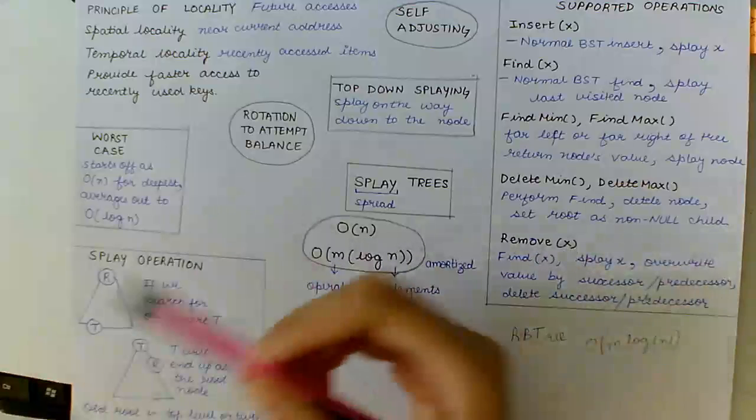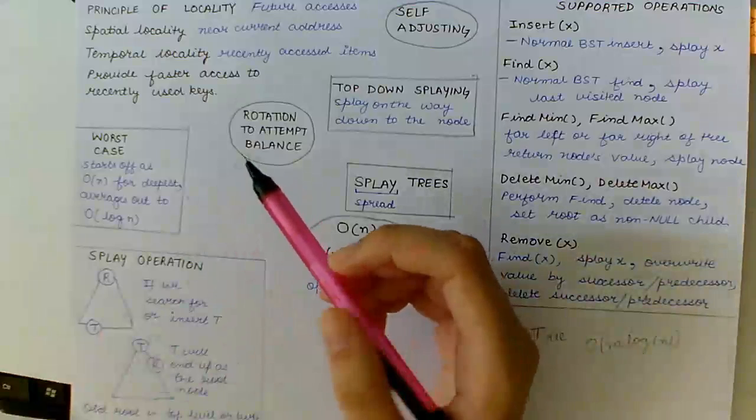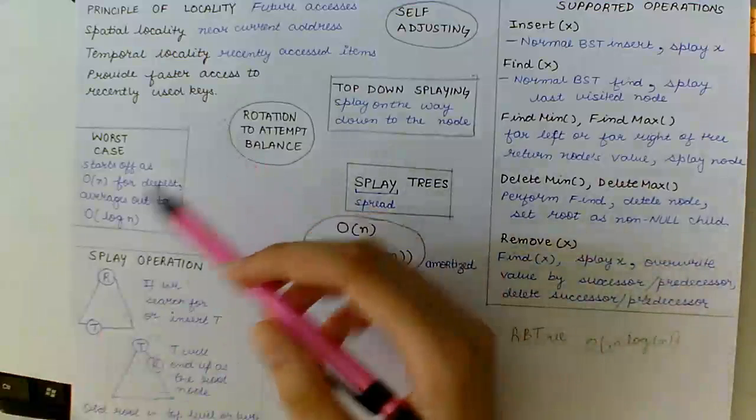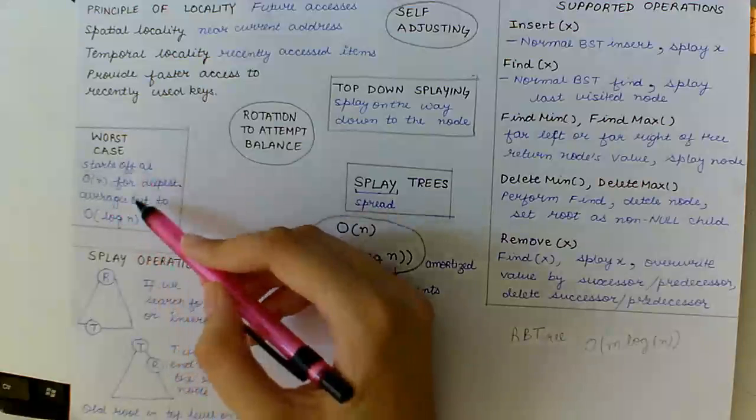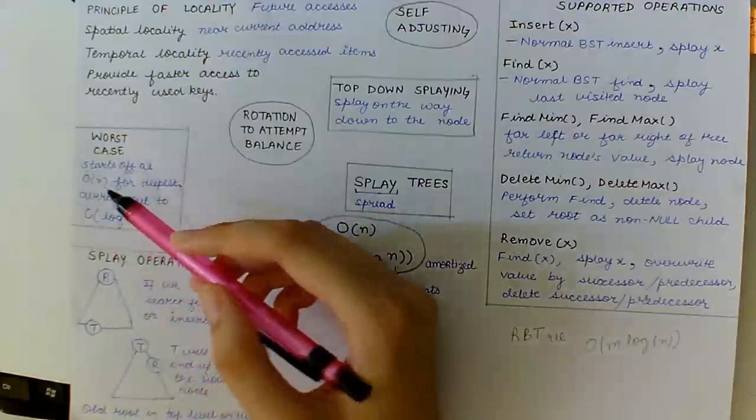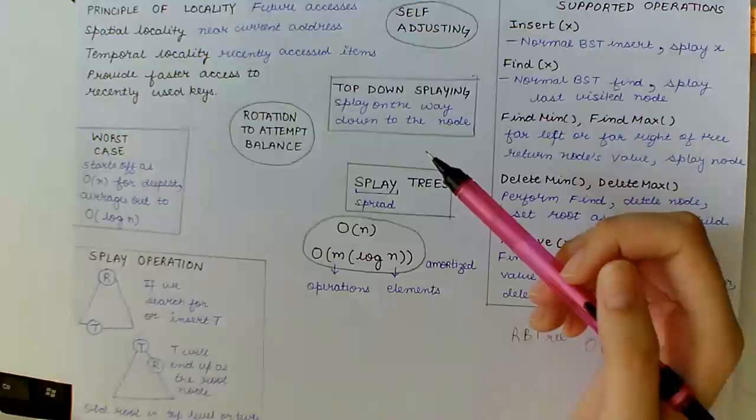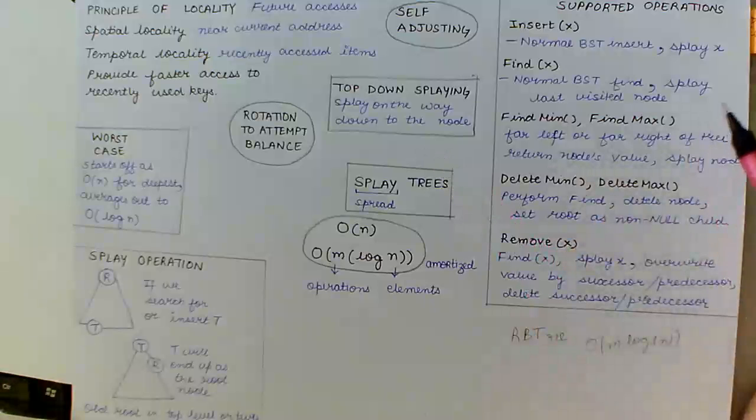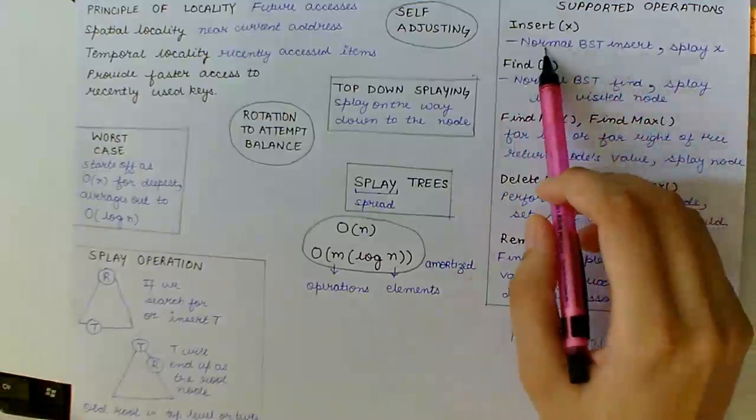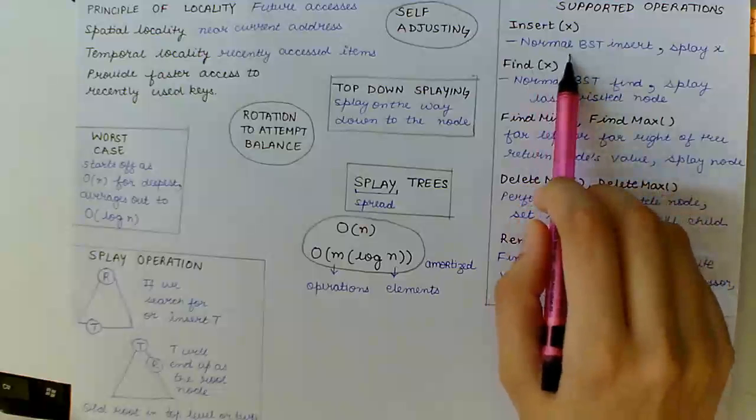But as it turns out, splay trees have a property that as we keep accessing deep nodes, the tree starts to balance and thus access to deep nodes starts costing O(log n) instead of O(n).